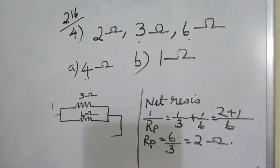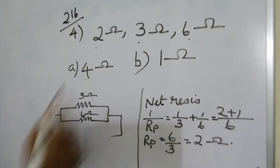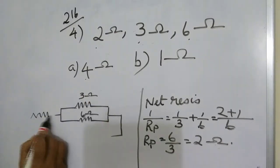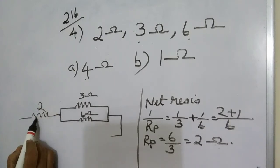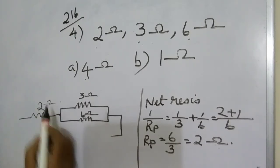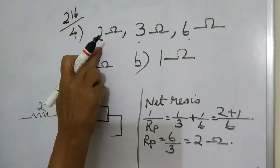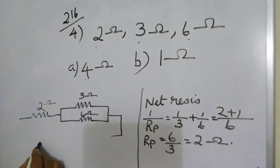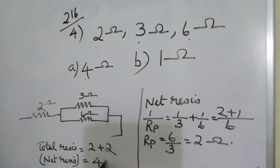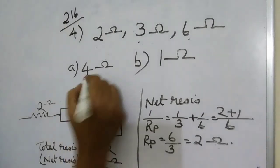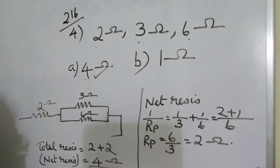We want to get 4 ohms total. So this parallel combination of 2 ohms will be connected in series with the individual 2-ohm resistor. Total resistance = 2 + 2 = 4 ohms, which is the required value. This is how we get the answer for the first question.